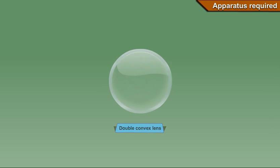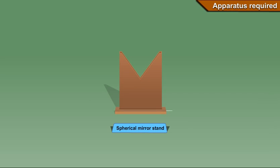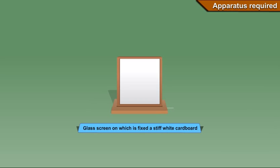Apparatus required: double convex lens, convex lens stand, glass screen fitted with stiff white cardboard, and meter scale.